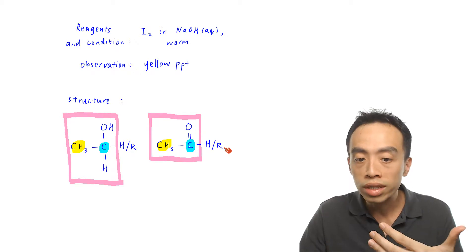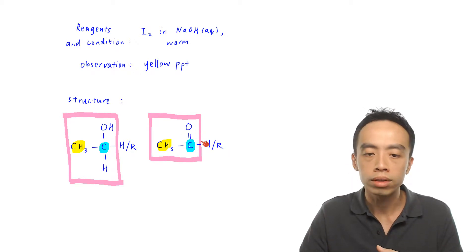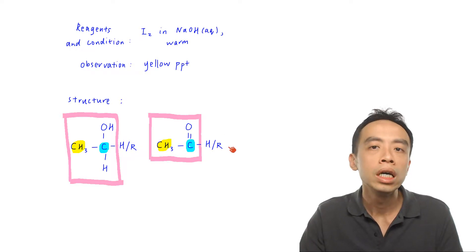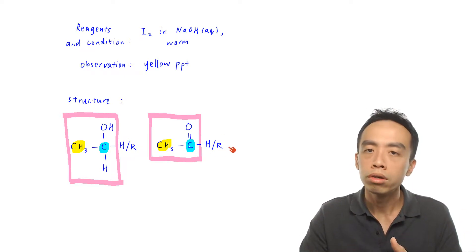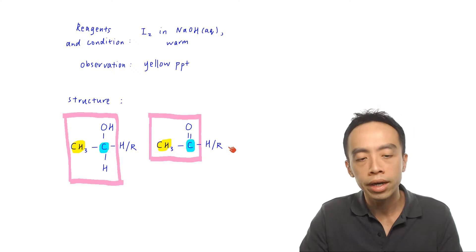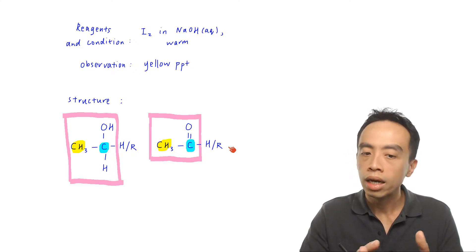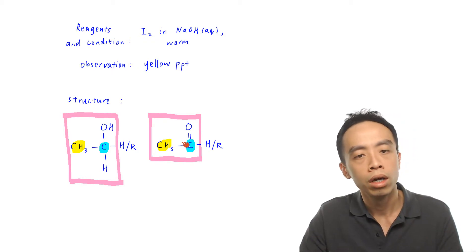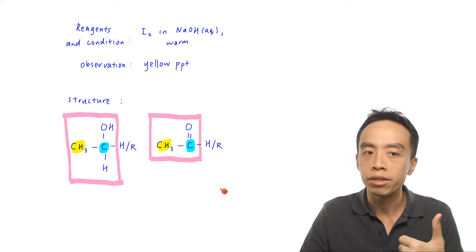We should not neglect the portion outside the box. The reason we didn't box up the hydrogen or R group is not because it is unimportant — it is because during the triiodomethane test, the two carbons inside the box are the ones that take part in the reaction.